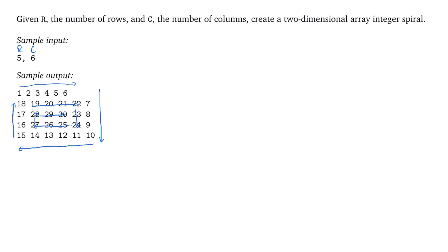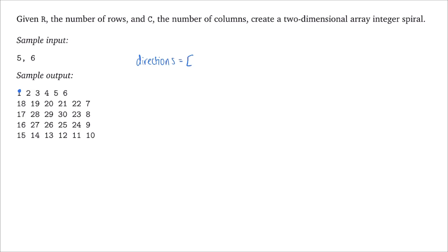This is essentially the spiral we want to make. This is a typical simulation problem. We generate a grid with r rows and c columns, start at the top left corner, and maintain a list of four possible directions. That directions list contains: 0 comma 1, 1 comma 0, 0 comma negative 1, and negative 1 comma 0.